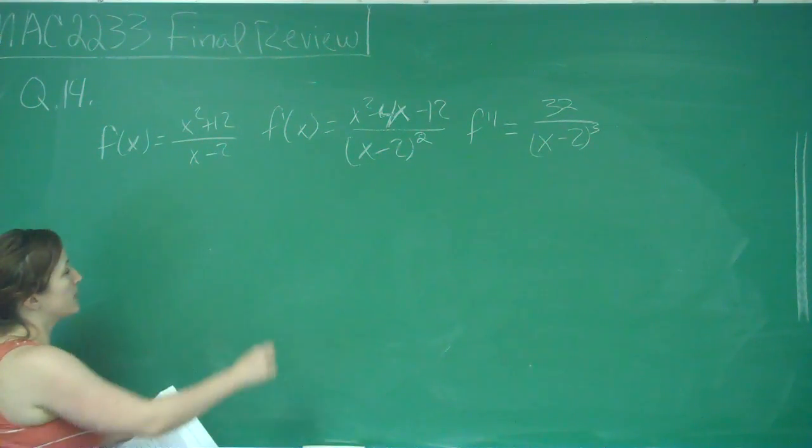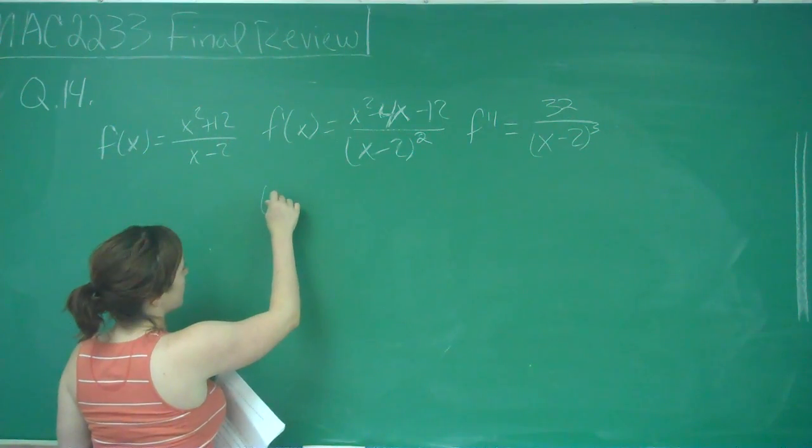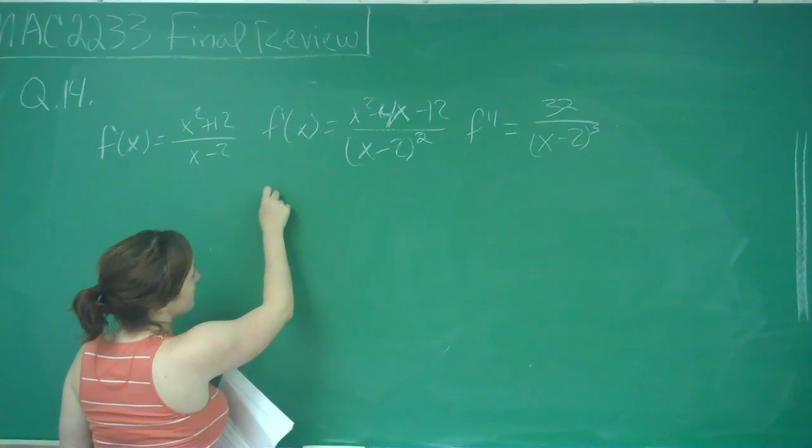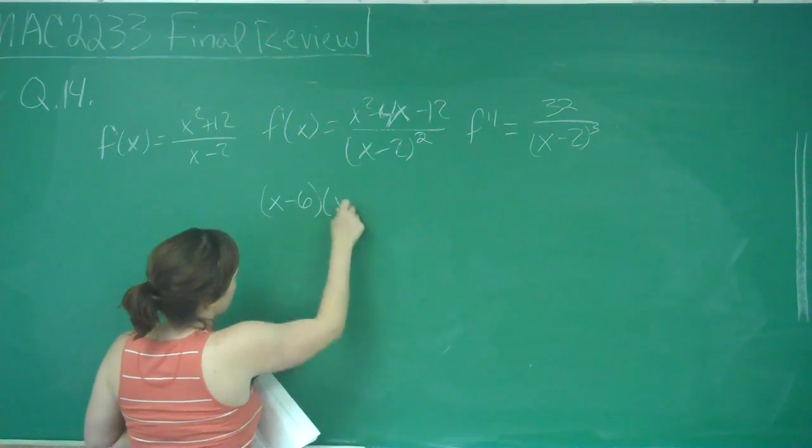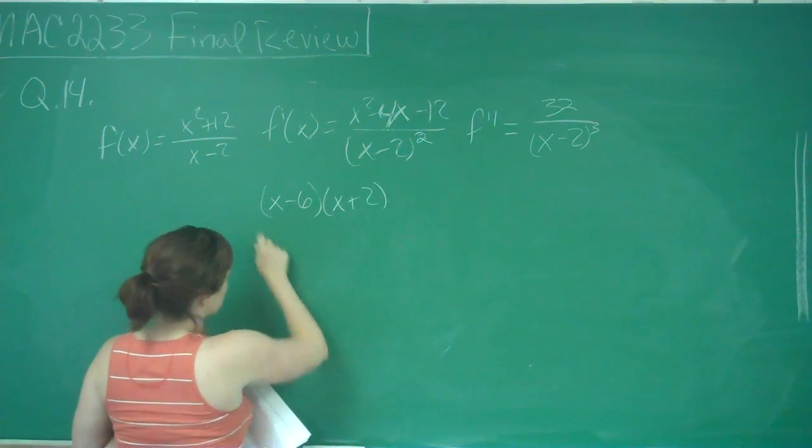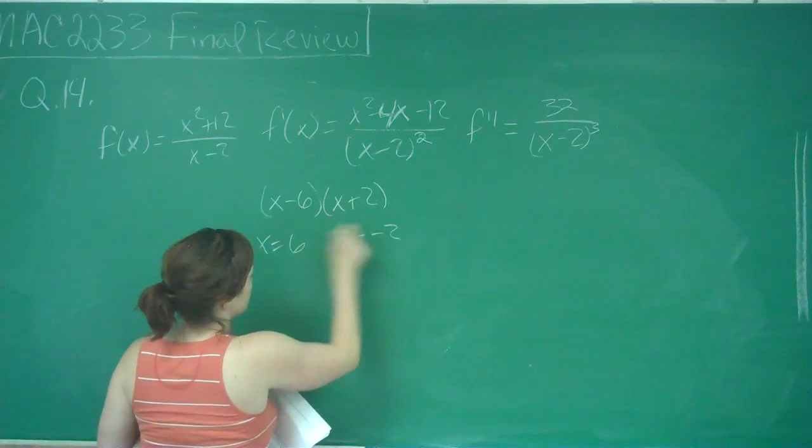So for maximum, we'll be dealing with the first derivative and we'll set the top equal to 0. I can factor out the top and get x minus 6 times x plus 2, so I get x equals 6 and x equals negative 2.